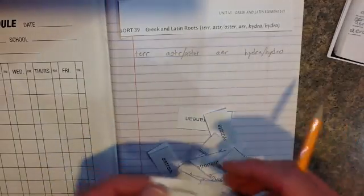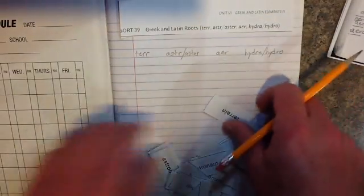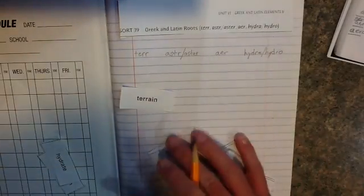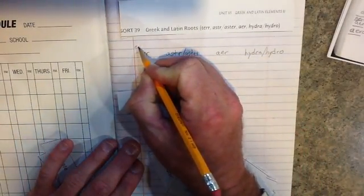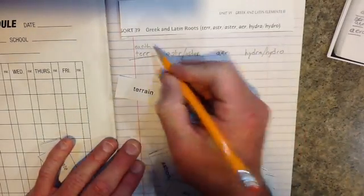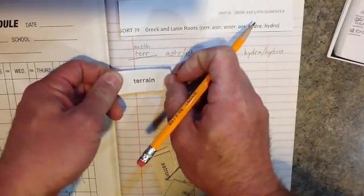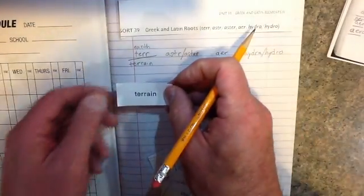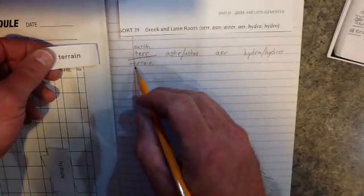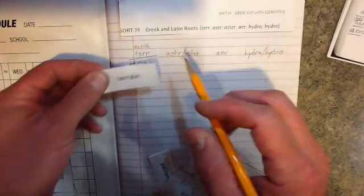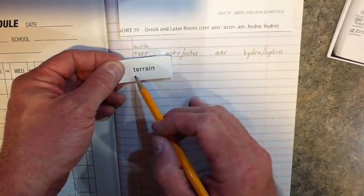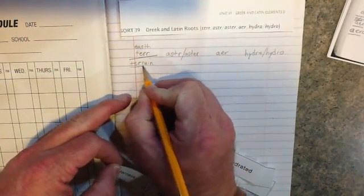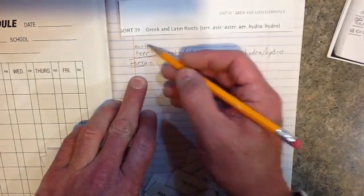Let's look at a couple of these words because in our sort today we've got some Latin roots and some Greek roots. Let's start out with T-E-R-R. The Latin root T-E-R-R actually means earth, so I'm going to put that right above it. Look at this word right here, we've got terrain. T-E-R-R-A-I-N, terrain, means earth.